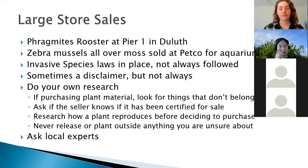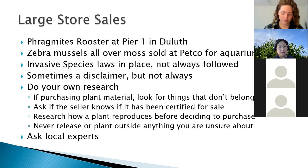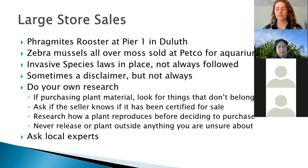Large store sales are another issue. Even though there are regulations in Minnesota prohibiting the sale of certain plants and animals, it doesn't always get caught, especially in big department stores. One example: at Pier 1 in Duluth, there was a Phragmites rooster. Phragmites is an invasive grass that overtakes wetland and riparian areas, grows to about 10 feet tall, and is a huge fire hazard. Wisconsin spends literally millions of dollars on fire suppression every year because Phragmites along the Lake Michigan coast lights up like matches. For us, we're worried it could overtake wild rice habitat and cause loss of bird and fish diversity. We have no idea how long that rooster was being sold or how many people bought it before someone noticed and got it off the shelf.